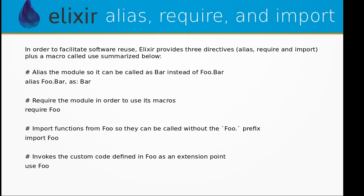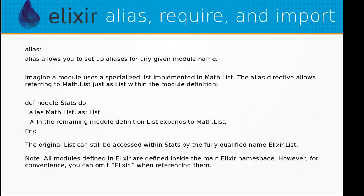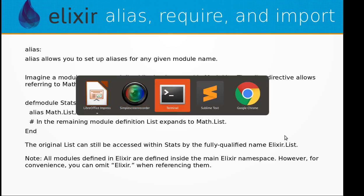In folks that to invoke the custom code defined in Foo as an extension point, you can use the keyword use. Let's first look at alias. Alias allows you to set up aliases for any given module name. Imagine a module uses a specialized list implemented in Math.List. The alias directive allows referring to Math.List just as List within the module definition.